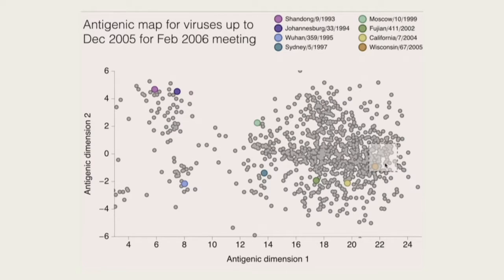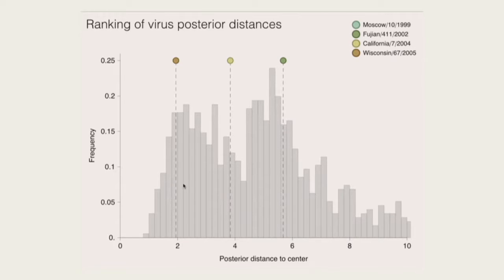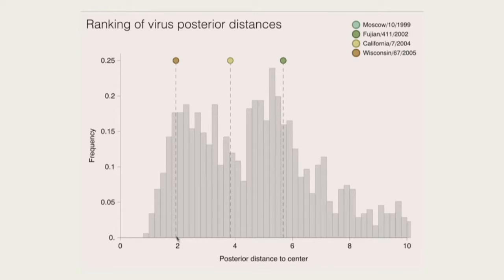If we go forward a year and see how good they did, including new data — the dark gray strains are those actually circulating in winter 2006-2007, and the red square is the centroid, the center of mass of those strains. The best possible vaccine would be basically where this red square is. We can see that Wisconsin 67 is actually a pretty good choice. We can assess this in more detail by looking at the distance of each gray dot circulating in 2005 to the red square. Wisconsin 67 is a pretty good choice — maybe a couple were marginally better — and it's two units better than California 07 from 2004, so a definite improvement.